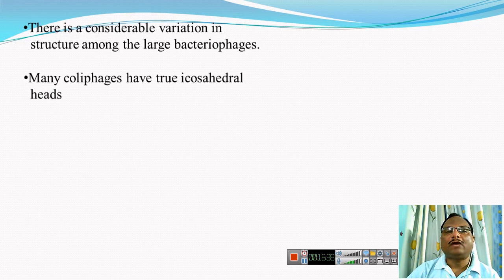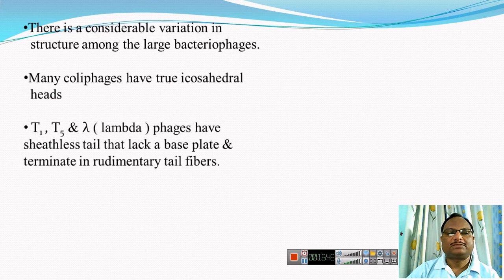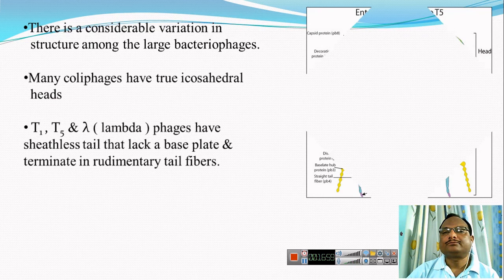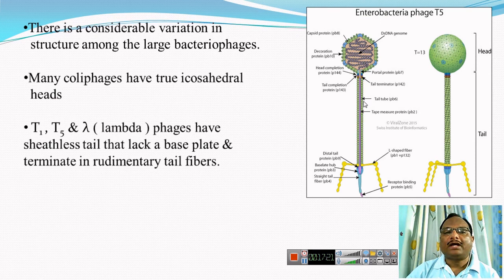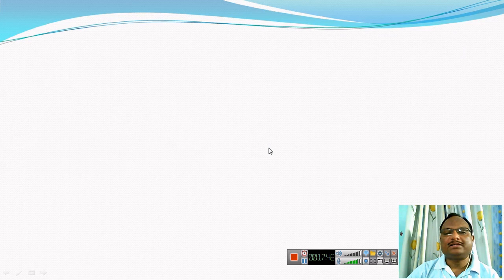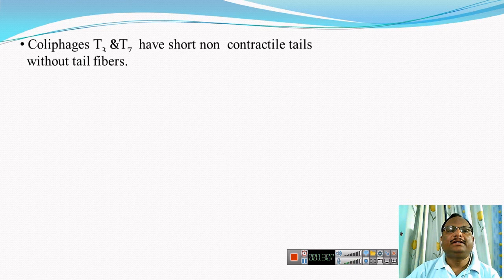There is considerable variation in the structure of bacteriophages. Many coli phages have two icosahedral heads. Coli phages like T1, T5, and lambda phages have a sheathed-less tail lacking the base plate and terminating in rudimentary tail fibers. The T5 bacteriophage, a T-odd phage, has an icosahedral head, but the tail has only a tail tube not surrounded by a sheath, no base plate, and terminates in rudimentary tail fibers used for attachment to the host cell surface.